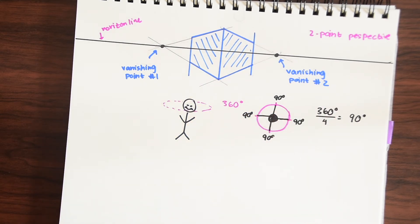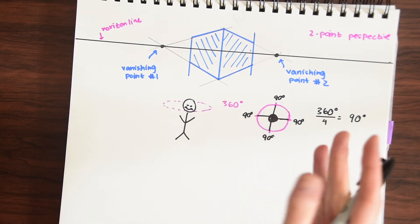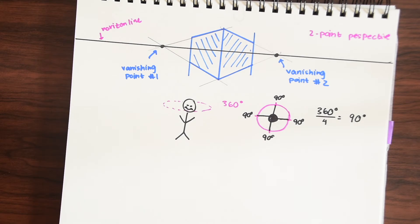So just spaced evenly around us at all times. So if this is a person they potentially have four vanishing points all around them at all times.